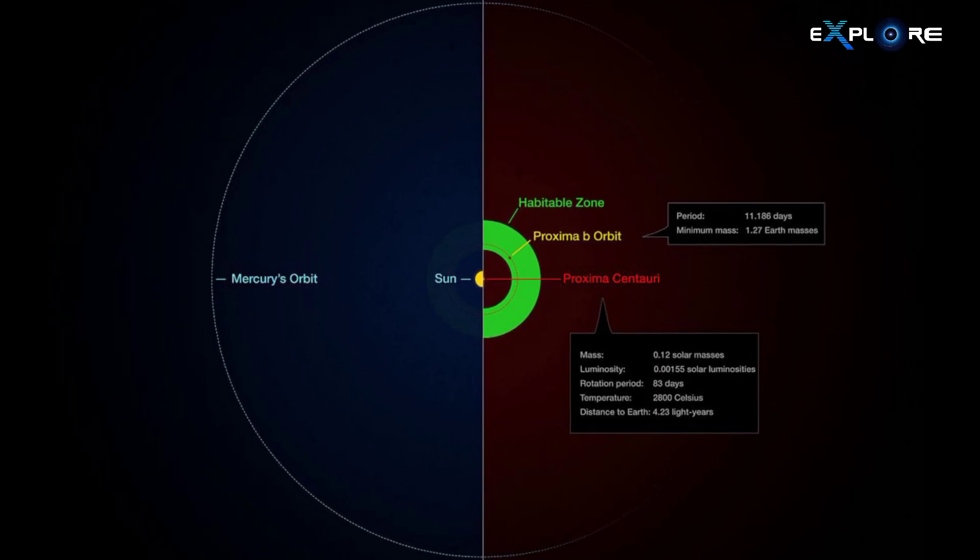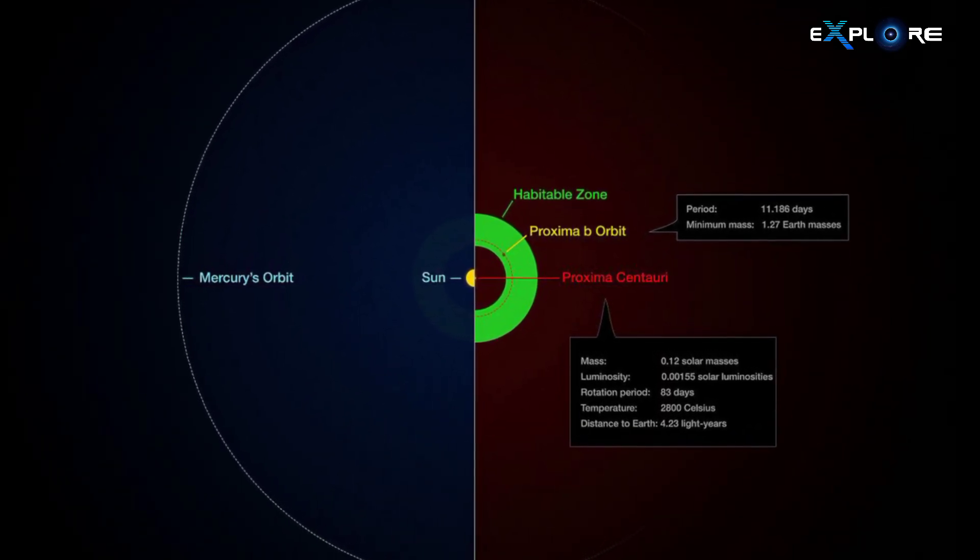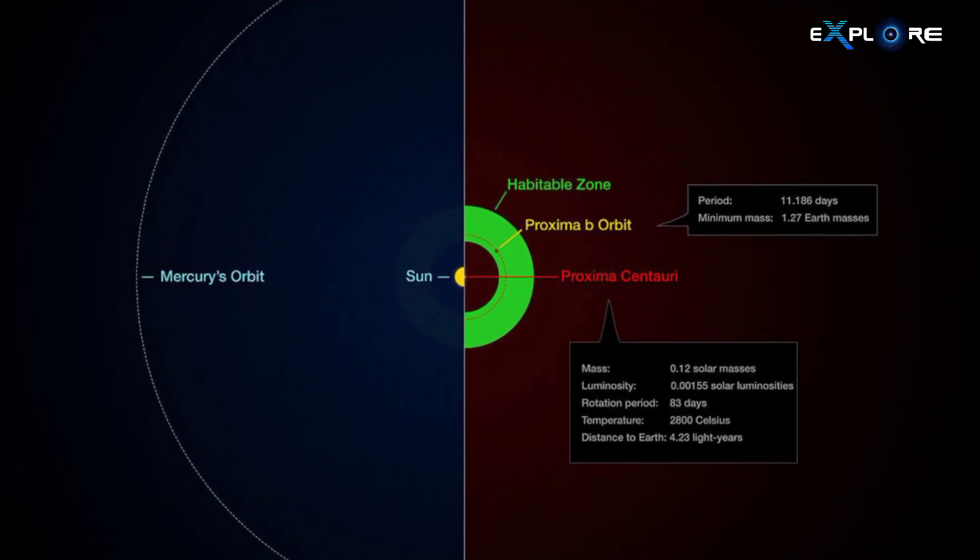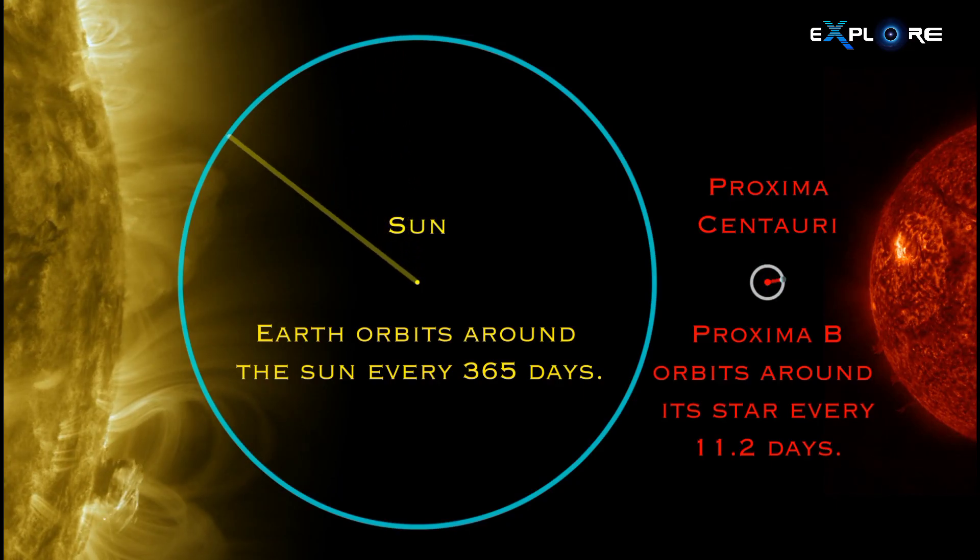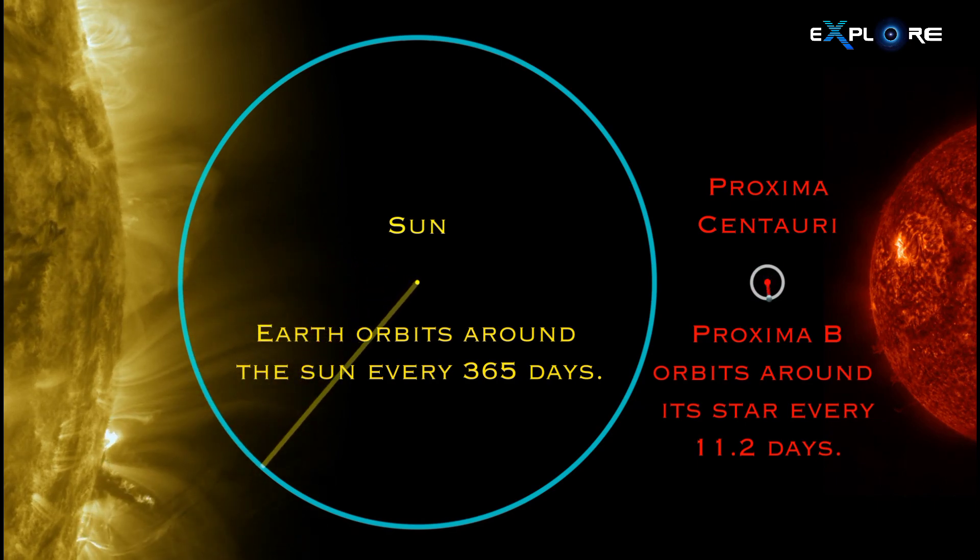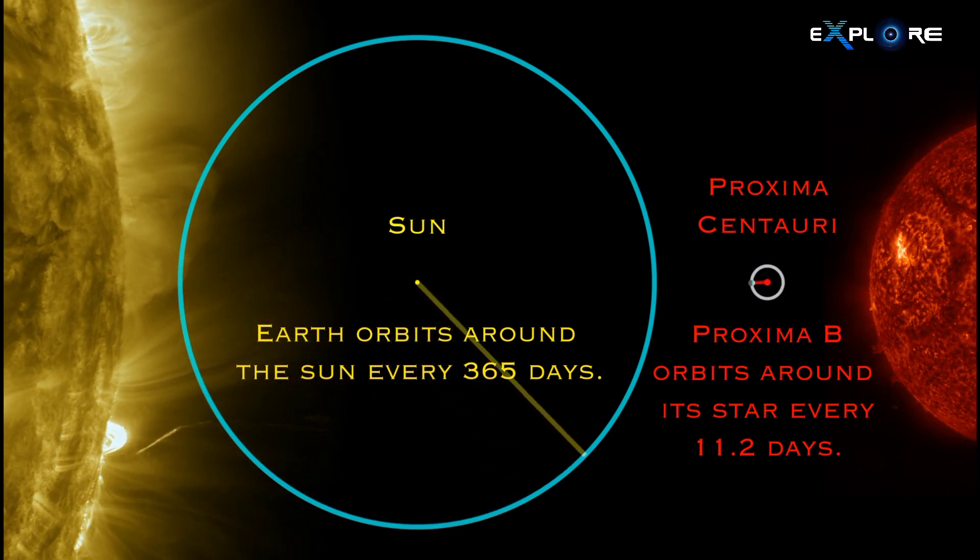Proxima B is much closer than Mercury's distance from the Sun, orbiting at a distance of 0.05 astronomical units, which prompts questions about the exoplanet's conditions and potential for life. Despite its closeness to Proxima Centauri,